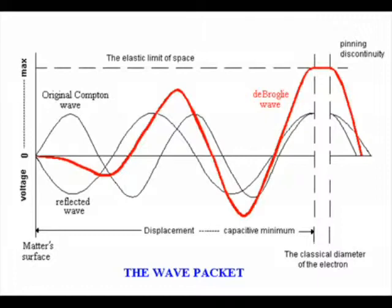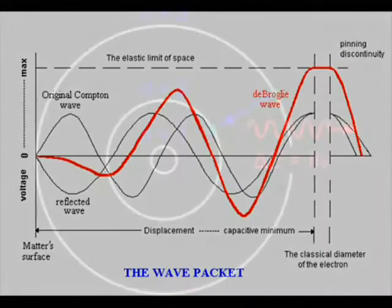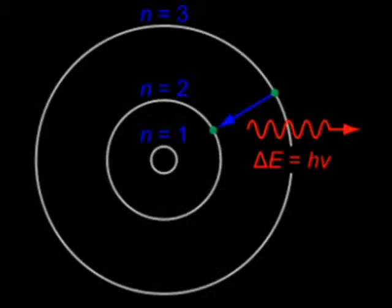Now this model, despite having the problems you pointed out, has served us right for the past hundred years. Cell phones, radios, computers, all our communications technologies are based on quantum mechanics. Why change the theory now?